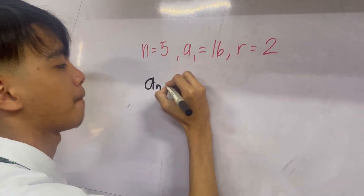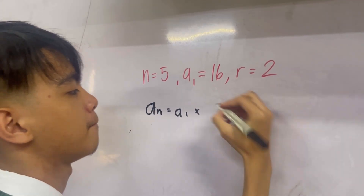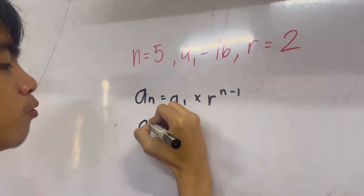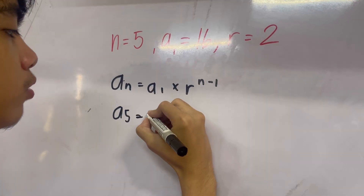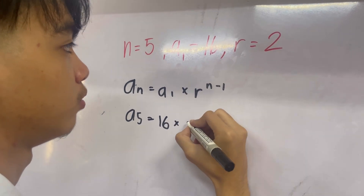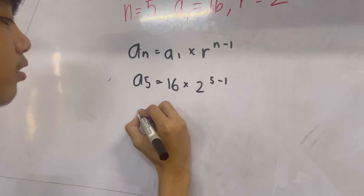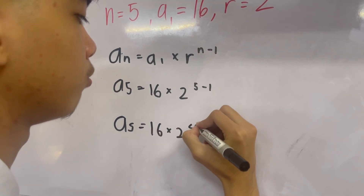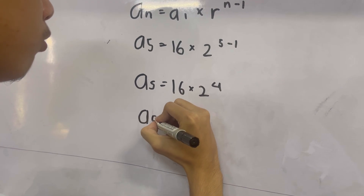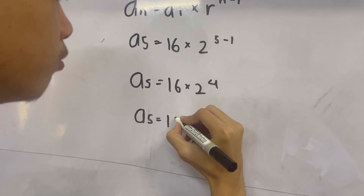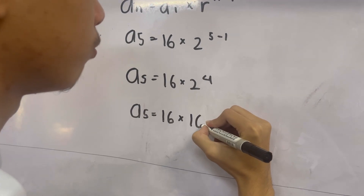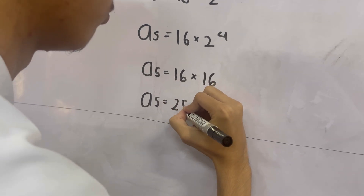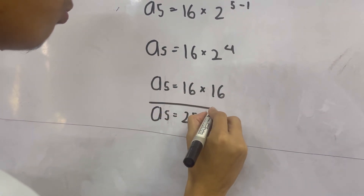The formula is A sub n equals A sub 1 times R, raised to n minus 1. Now replace the variables with the numbers. A sub n becomes A sub 5, A sub 1 is 16, R is 2, and n is 5, so we compute 5 minus 1, which is 4. A sub 5 equals 16 times 2 raised to the power of 4. Two to the power of 4 is 2 times 2 times 2 times 2, which equals 16. So A sub 5 equals 16 times 16, giving the answer A sub 5 equals 256.